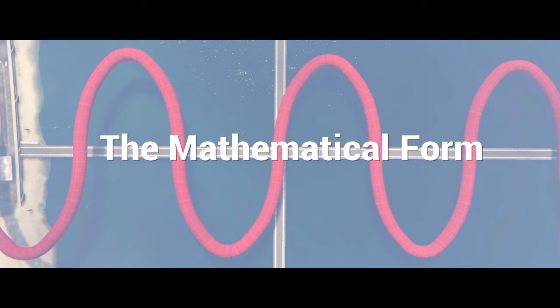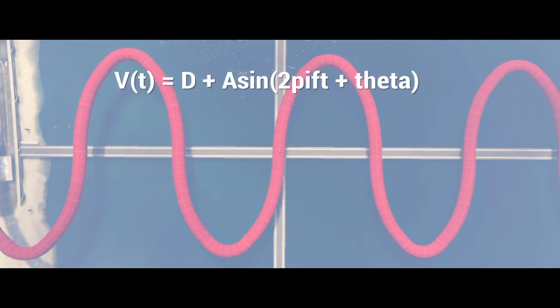The mathematical form of the sine wave can be expressed in the following, where V is the instantaneous voltage at any point in time.